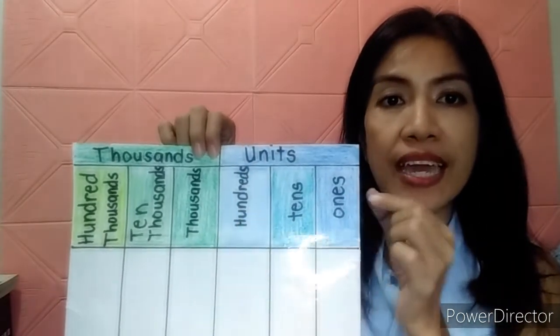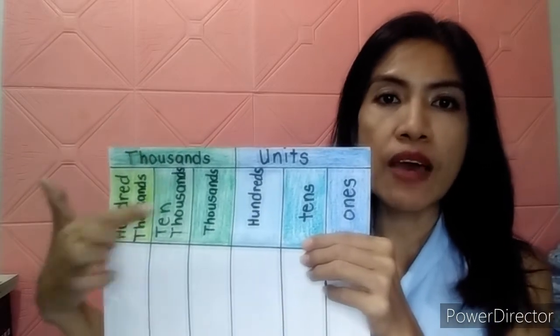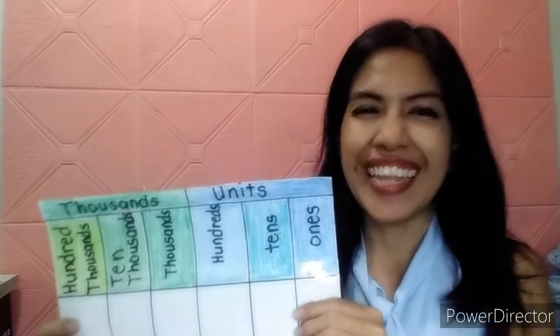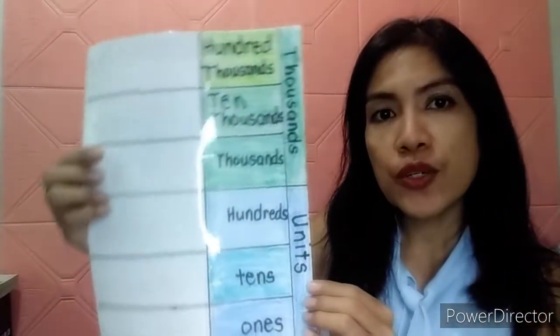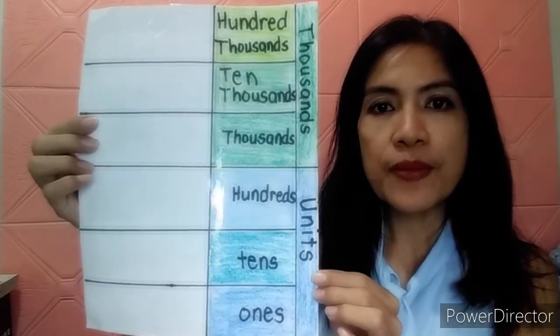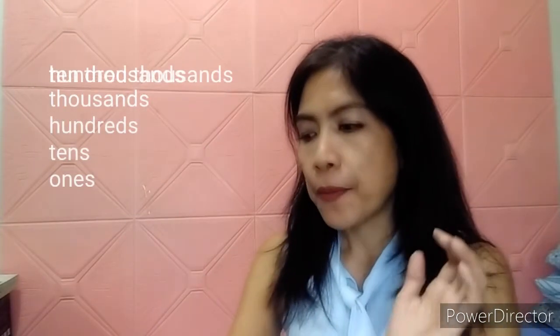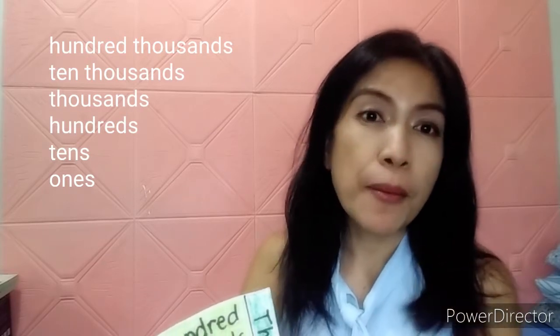So, we have the units: ones, tens, hundreds. And for the thousands, we have thousands, ten thousands, and hundred thousands. It's necessary for our kids to remember the place value names so they know the place value of each digit being asked. Others would sing it: ones, tens, hundreds, thousand, ten thousand, hundred thousand. Or others would remember it by memorization, depending on how your kids memorize it.